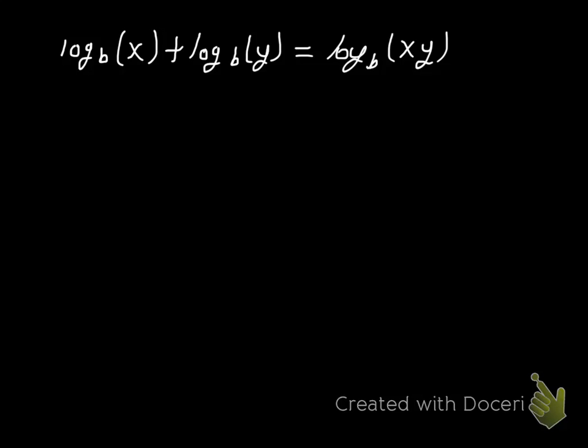So we're going to look at our rule: log base b of x plus log base b of y, using the product rule that would condense it down into log base b of x times y. But we're going to go from the right side and we're going to go to the left.